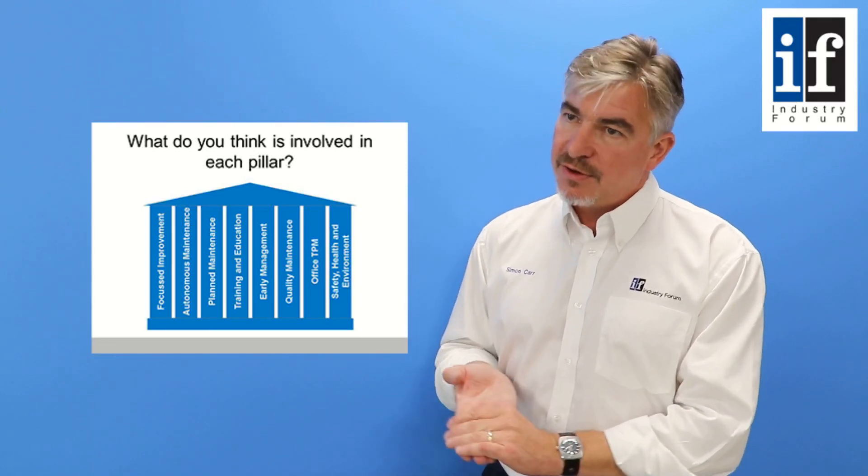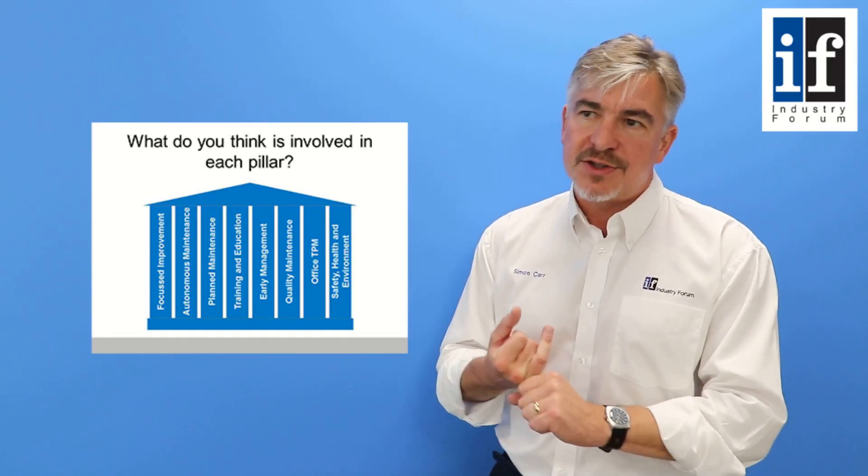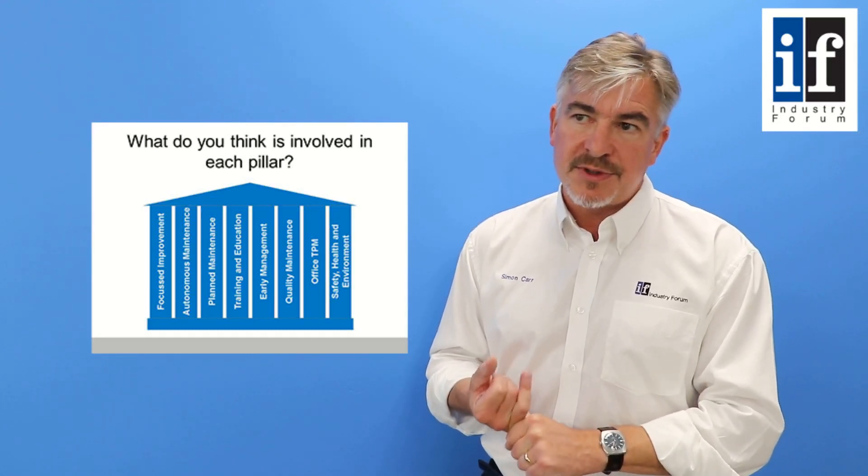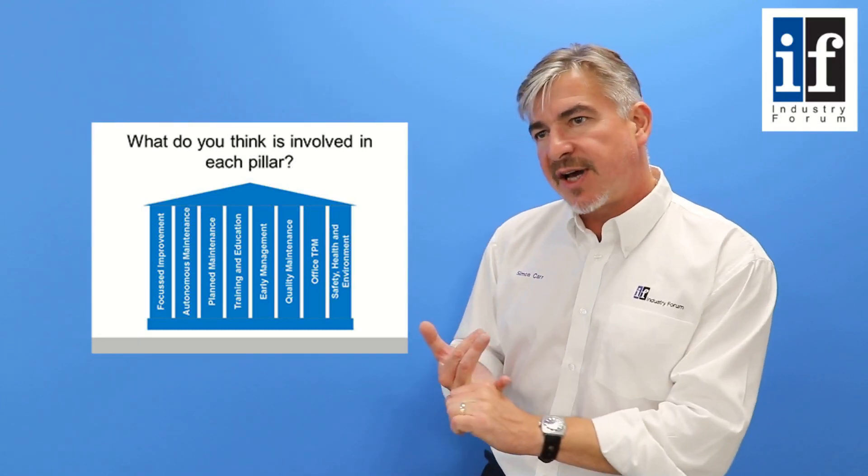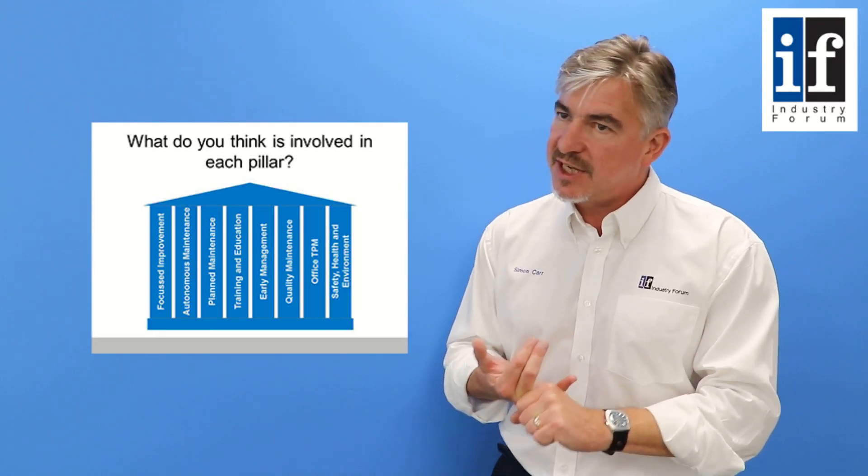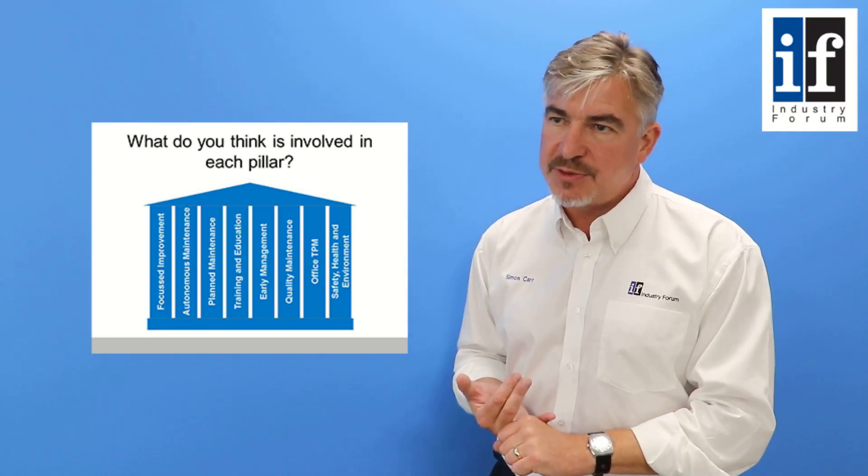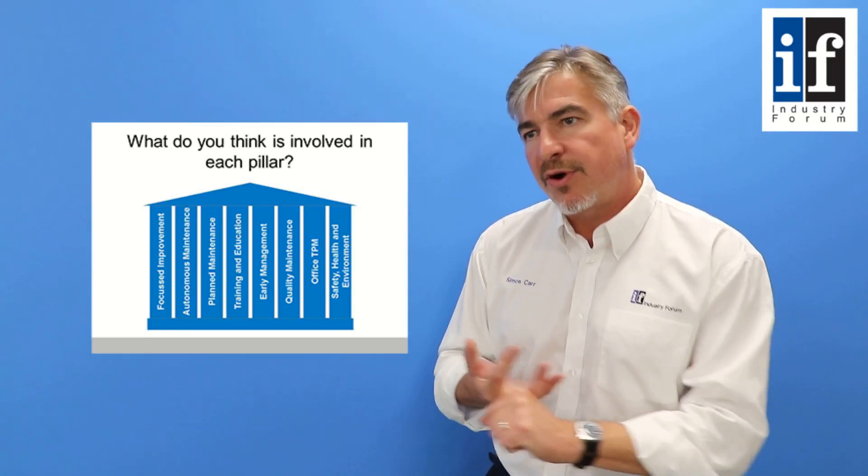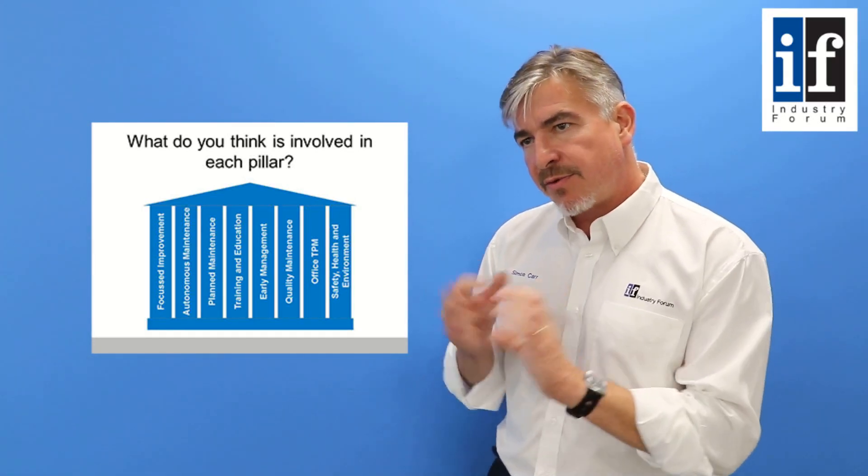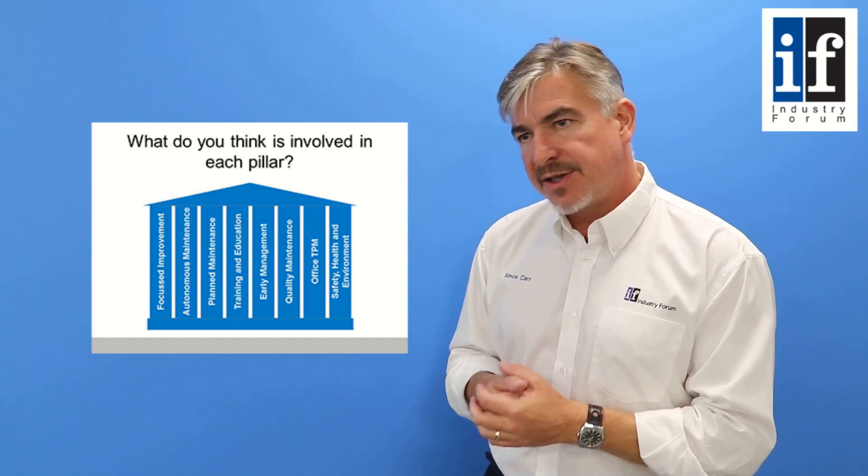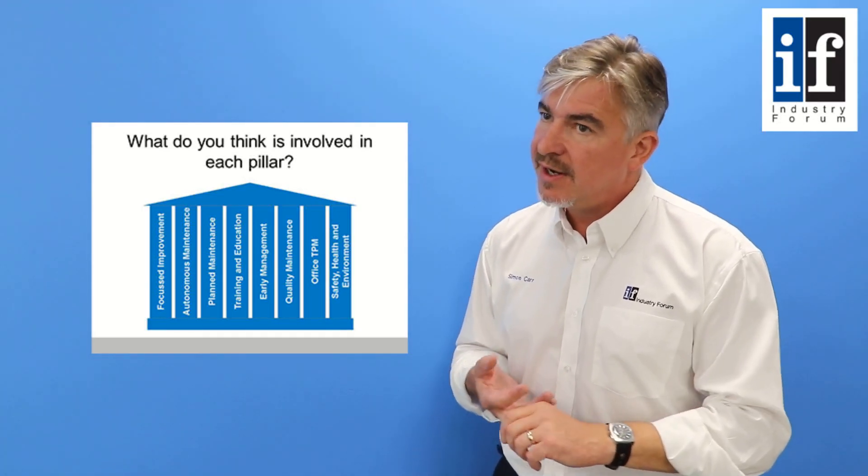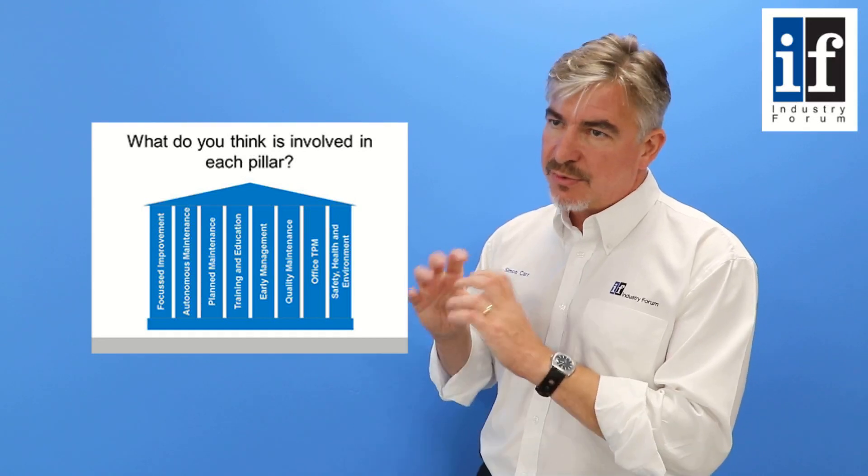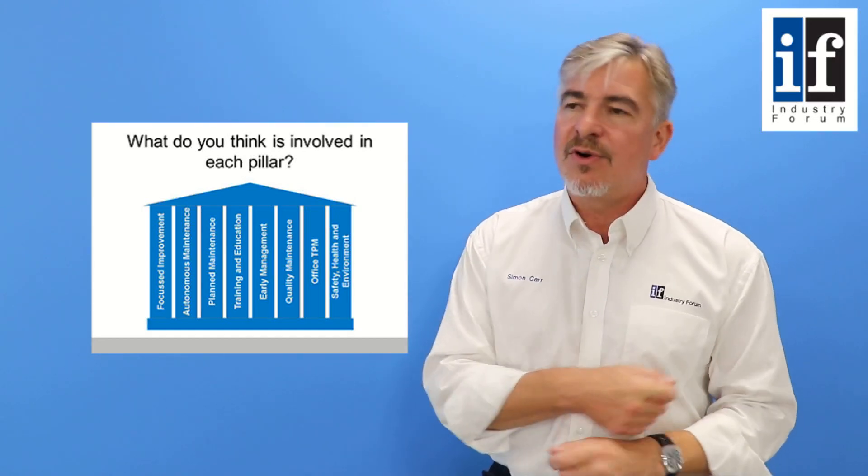There are other pillars that look at different areas. There's one that looks at new product and new process, that's described as early management. There's a pillar that looks at supply chain and supporting processes, that's the office pillar. There's a pillar that looks at the quality systems, that's the quality maintenance pillar. And there is a pillar that looks at safety, health and environment, and really elements of that run through all of the other pillars.